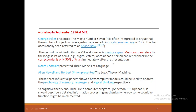Noam Chomsky presented three models of language. He focused more on the syntactic aspect of language — whether mathematics, English, Kannada, or Marathi, every language has its own rules and regulations called grammar, and these grammars must be taken into consideration when drawing conclusions. Newell and Simon proposed the logical theory of the mind, which was based on the foundation called syllogism proposed by Aristotle. These three influential papers showed how computer models could be used to address the psychology of memory, language, and logical thinking respectively.